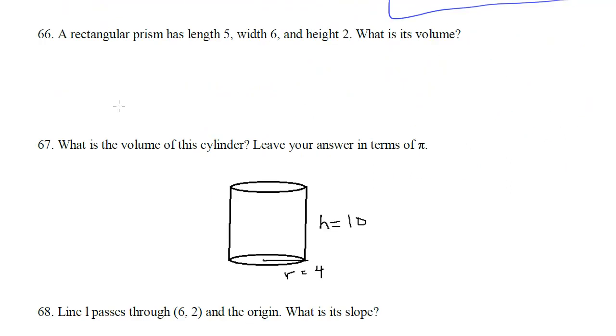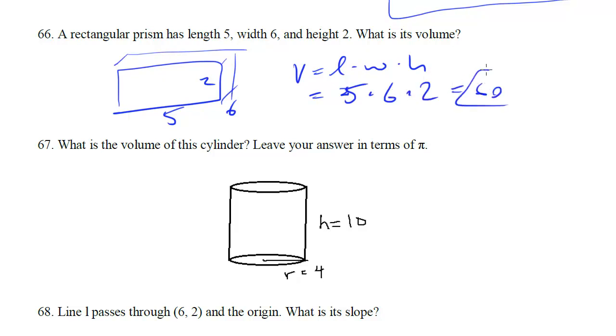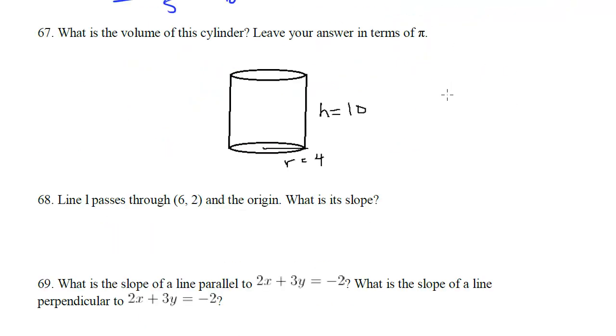A rectangular prism has length 5, width 6, and height 2. What is its volume? Well, volume is length times width times height, which in this case is 5 times 6 times 2, which is 60. What is the volume of the cylinder? We know for cylinders the volume is πr²h, so let's just put in our information: π times 4² times 10. Do the math: 160π.